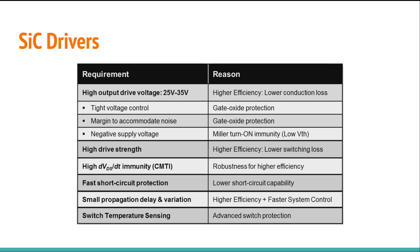The last requirements for silicon carbide are fast short circuit protection and a small propagation delay. A smaller propagation delay means smaller dead time, and therefore reduces power loss through the MOSFET's body diode. This also reduces the system control response time.